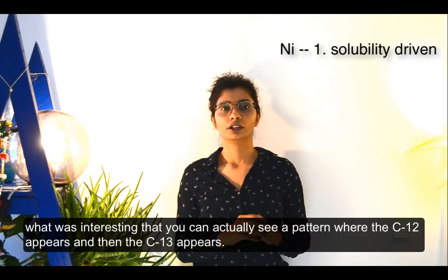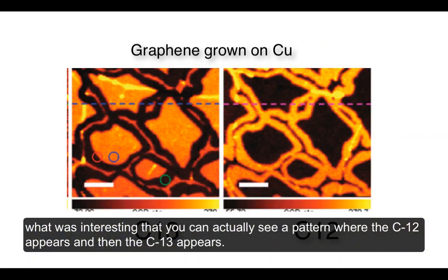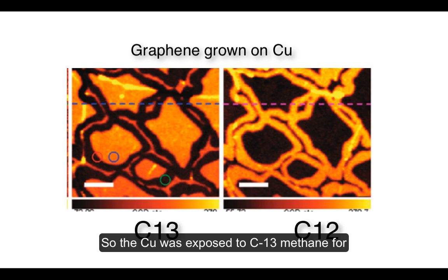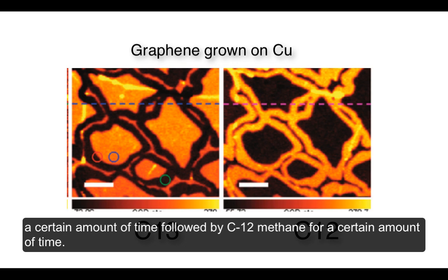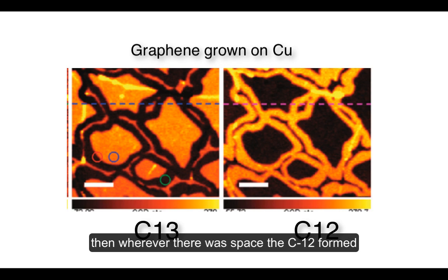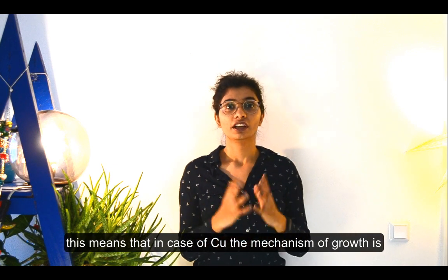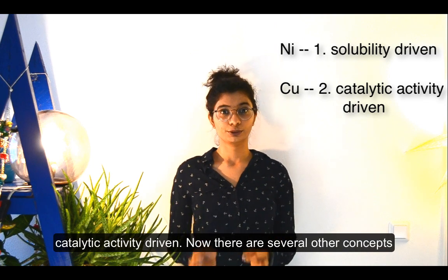But in the case of copper, what was interesting is that you can actually see a pattern: C13 appears first, then C12 appears. The copper was exposed to C13 methane for a certain time, followed by C12 methane. So the large areas are C13, and then wherever there was space, the C12 graphene formed. This means that in the case of copper, the mechanism of growth is catalytic activity-driven.